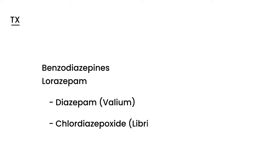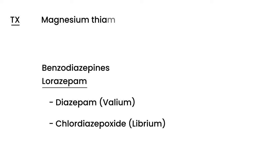In addition to benzodiazepines, there are other things used to manage alcohol withdrawal. You need to correct the patient's nutritional status — magnesium is used, and thiamine is very important because it helps prevent encephalopathy. Usually you also give IV fluids to help correct the electrolyte disturbances that can occur.